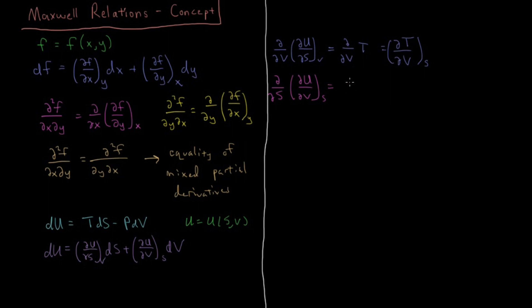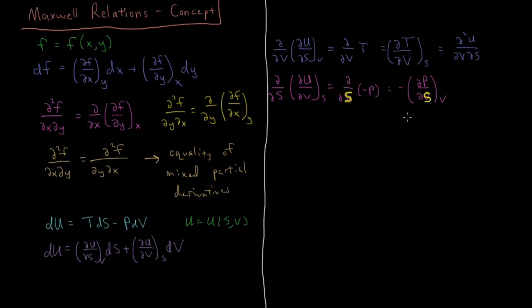We can do the same thing in reverse, finding the other mixed partial derivative. We take du/dV at constant S and differentiate that with respect to entropy. Now du/dV is just minus pressure, as we see from the correspondence of those lines. So we have d/dS of (−P), which equals the minus partial derivative of pressure with respect to entropy at constant volume. This top expression is the second partial derivative of u with respect to V and S, and the second line is d²u/dS dV. Through the equality of mixed partial derivatives, these two must be equal.